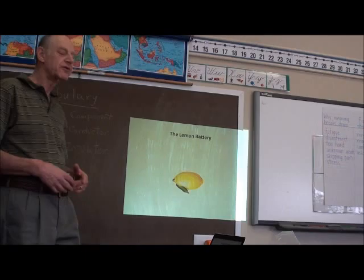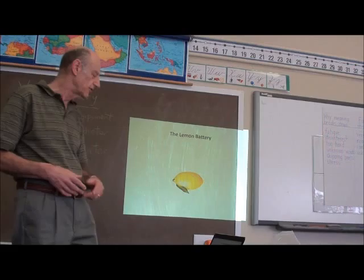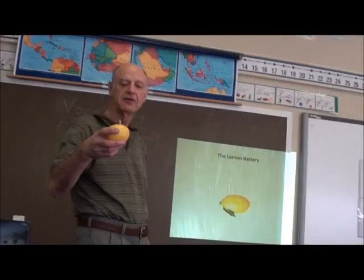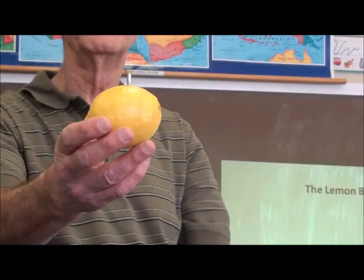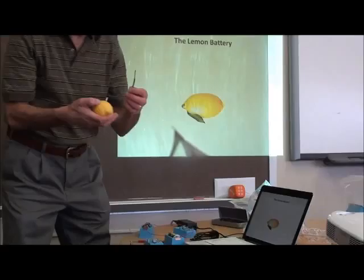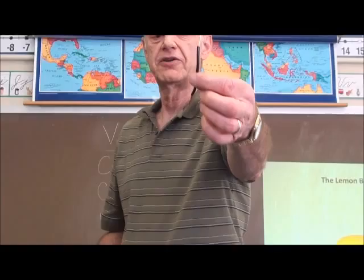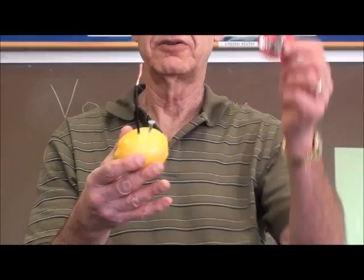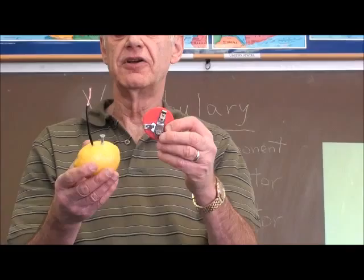Then, kind of for fun, I want to show them that not all batteries look like D cells. Instead, what I have is a lemon — and they all think that's fun. I put a zinc screw into the lemon, and since I don't know where to find a copper screw, I just take a piece of heavy gauge copper wire and put it in.